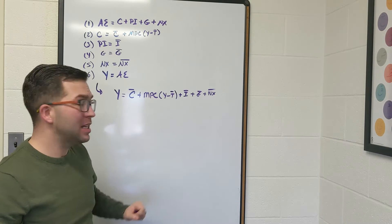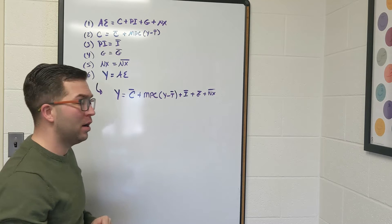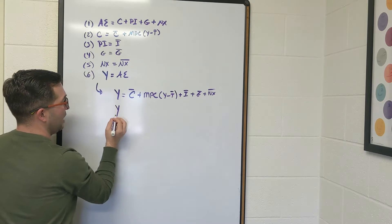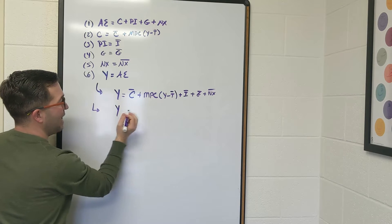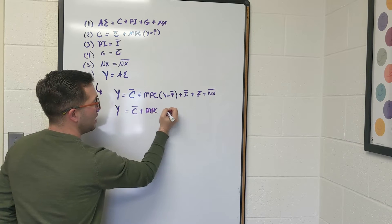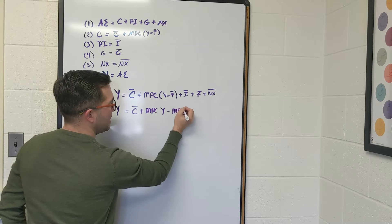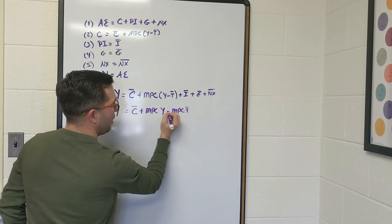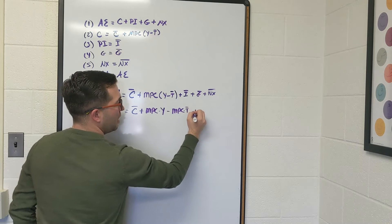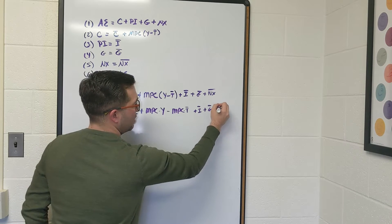The first step is let's go ahead and distribute this marginal propensity to consume through to both Y and T̄. So we'll just say Y is actually equal to, therefore Y equals C̄ plus MPC times Y minus MPC times T̄ plus Ī plus Ḡ plus NX̄.